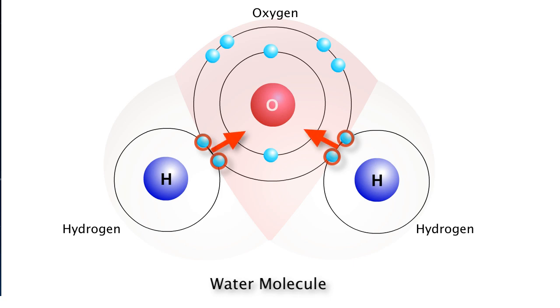Since electrons have a negative charge and spend most of their time near the oxygen atom, the oxygen atom itself takes on a slightly negative charge and the hydrogen atom becomes slightly positive.